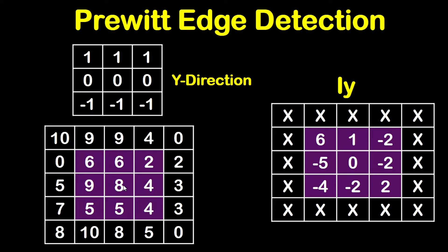Again we will multiply and add: 10×1 + 9×1 + 9×1 + 0×0 + 6×0 + 6×0 + 5×(−1) + 9×(−1) + 8×(−1). This will result in 6. And so on for all pixels in this highlighted region.